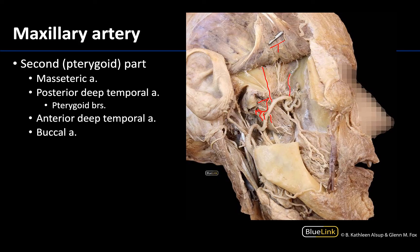Continuing on, you can see the anterior deep temporal artery also going to supply the temporalis muscle. And lastly you're going to have this artery right here, which is the buccal artery. The buccal artery is going to accompany the buccal nerve — sometimes referred to as the long buccal nerve — which you can see right here, into the buccal fascial space. This artery actually supplies some of the blood to the buccinator muscle. The long buccal nerve will not innervate the buccinator, as that is efferently innervated by a facial nerve branch; the long buccal nerve here is a sensory branch for this region.